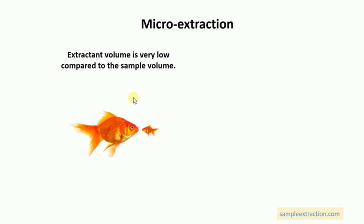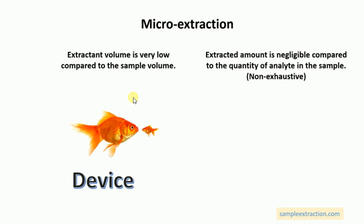This diagram shows how a micro extraction device differs from an extraction device. The second feature is that the extracted amount is negligible compared to the total quantity of analyte in the sample — this is called non-exhaustive sampling. This is the most important feature of micro extraction, enabling unique applications such as on-site or in-vivo quantification and many useful calibration methods.